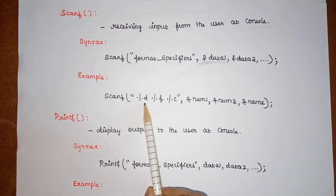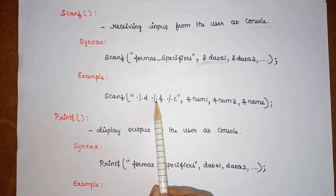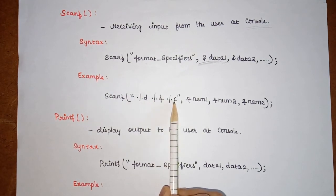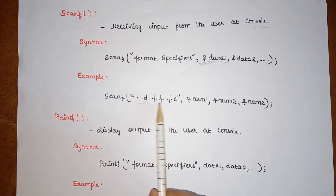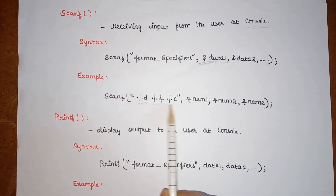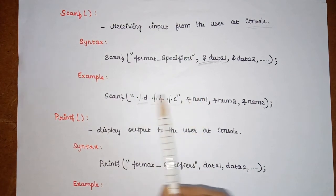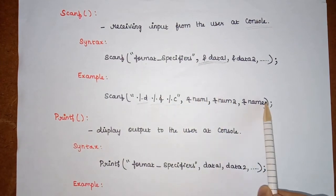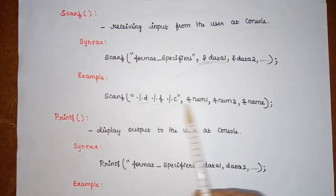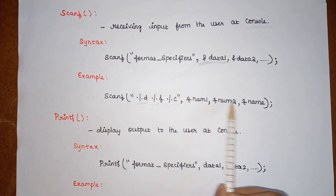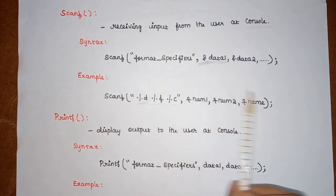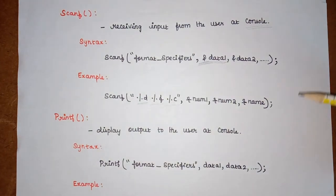In the scanf example, we have three format specifiers: %d for an integer variable, %f for a float variable, and %c for a character variable. The corresponding arguments are num1, num2, and name respectively, each preceded by the ampersand symbol.